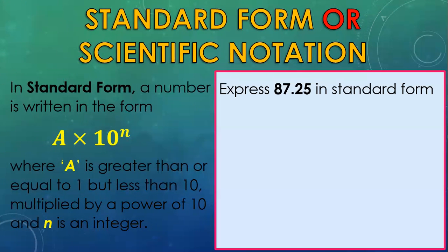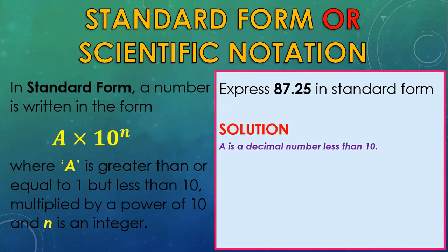We are asked to express 87.25 in standard form. You may pause the video and attempt this question. We know that a is a decimal number that is less than 10, which means my decimal point must be between 8 and 7, giving us a is equal to 8.725.